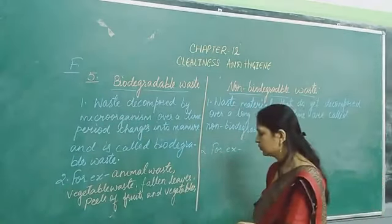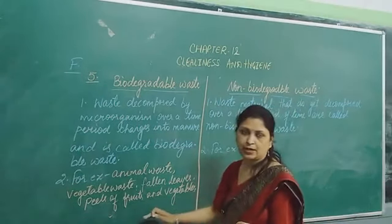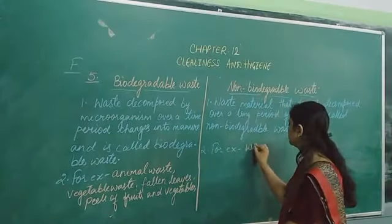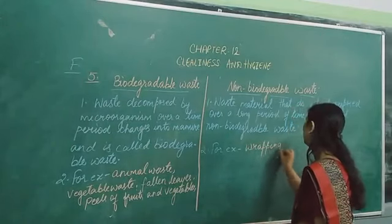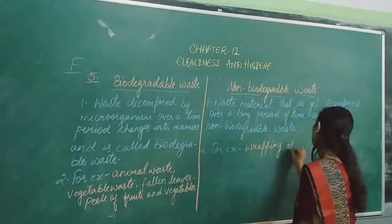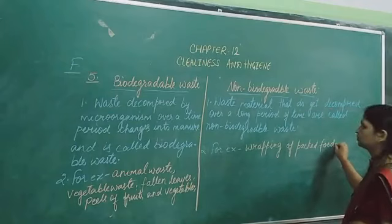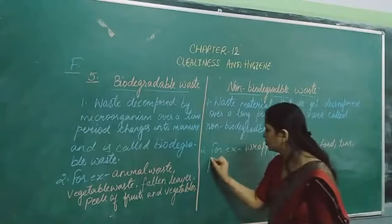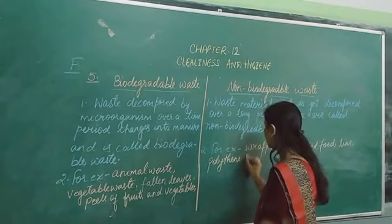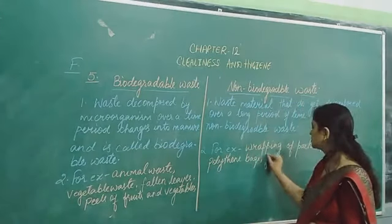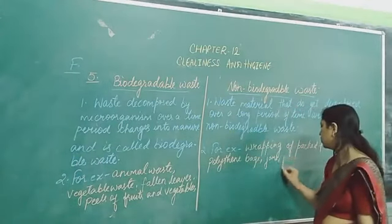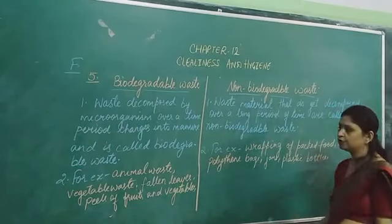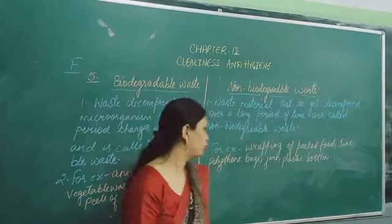Then you can also add any other examples which are given in your book. For non-biodegradable waste, examples include plastic bags and plastic bottles. You have to write at least 4 examples.